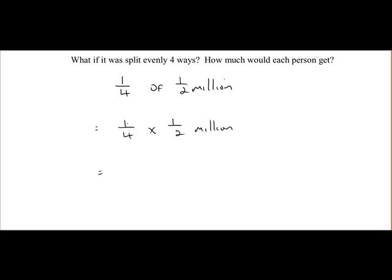Again, it's top by top, so it's 1 by 1, bottom by bottom, 4 by 2, which is 8. So you'd end up with one-eighth of a million, which is 125,000 euro.